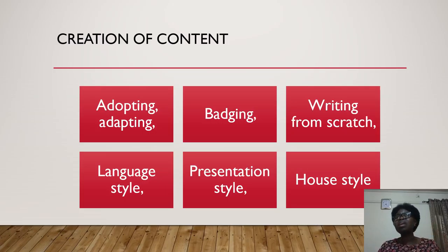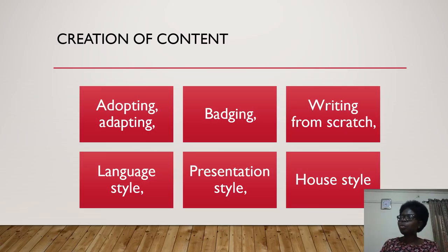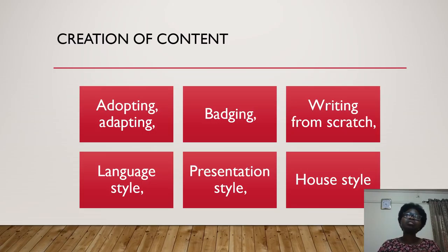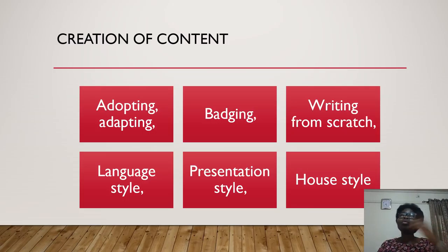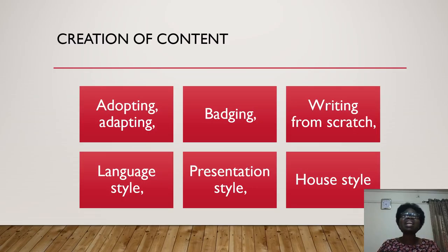Badging is the next option. In badging, you are not doing much changing — it is in between adopting and adapting. You are just removing certain things; for example, if University A wants to badge a material from University B, University A can, by contract agreement, remove University B's logo and replace it with their own logo. They can also change names in the material — for instance, changing 'Mark' to 'Adeboye' or 'Joe' to 'Olubenga.' Those are the areas of badging.